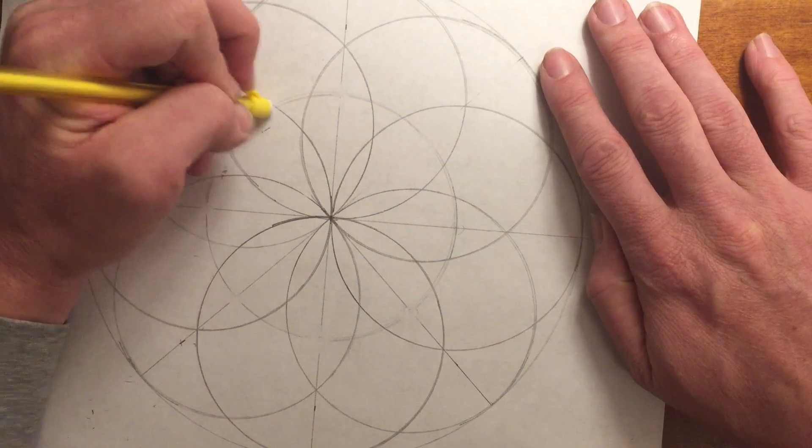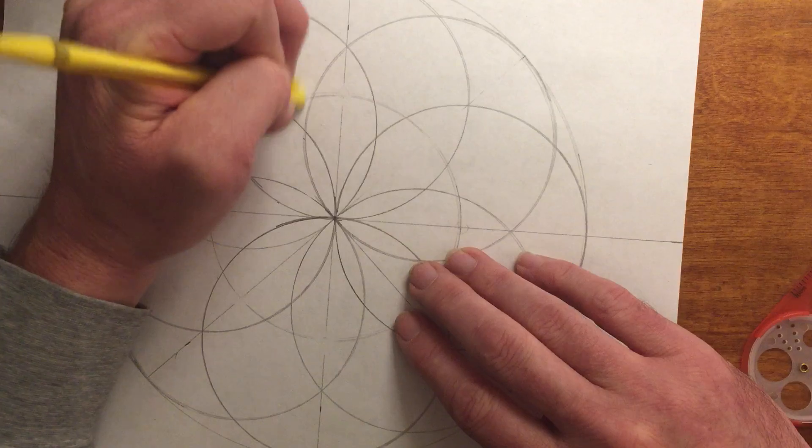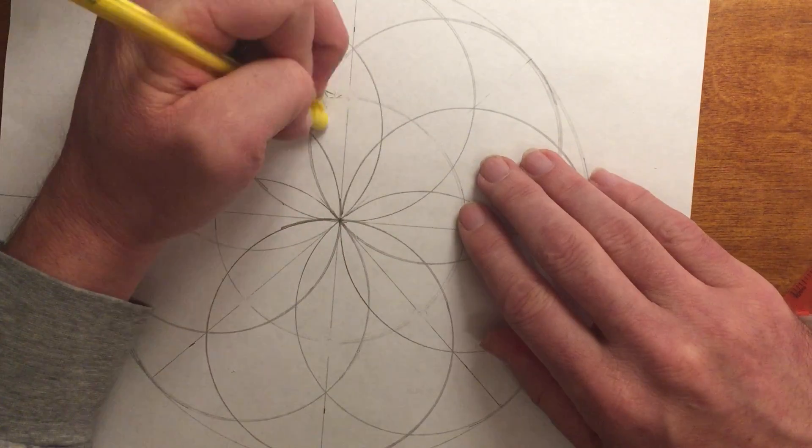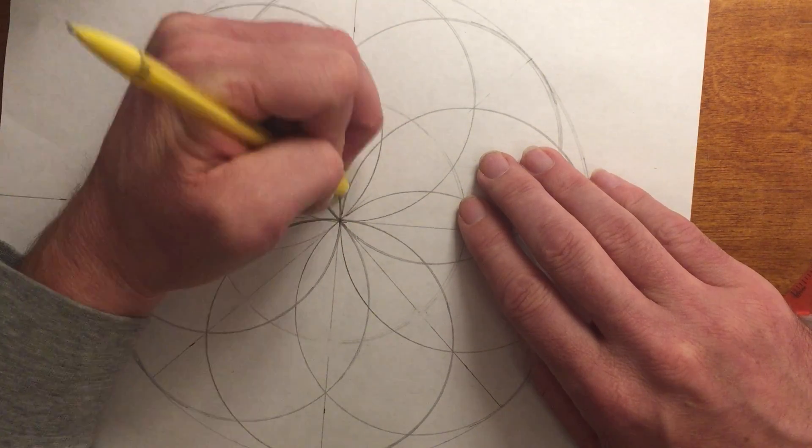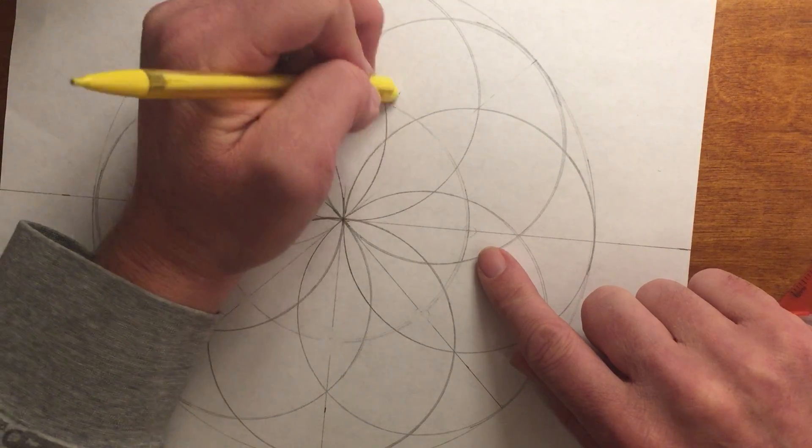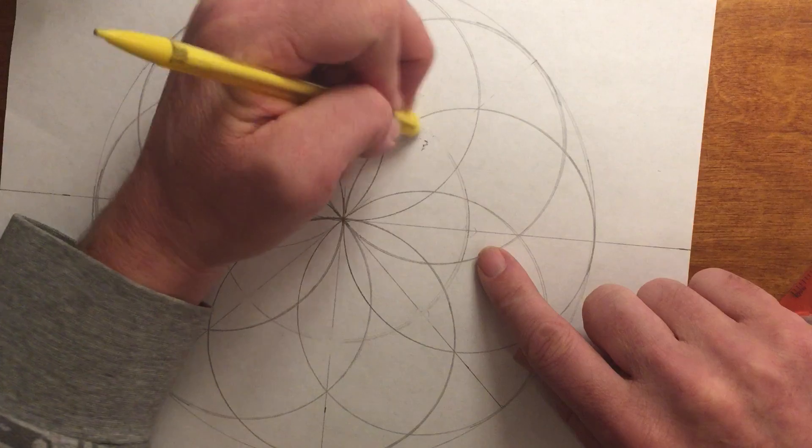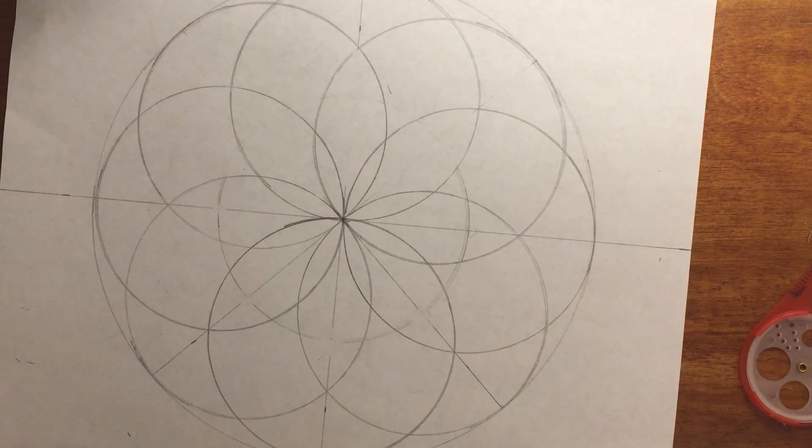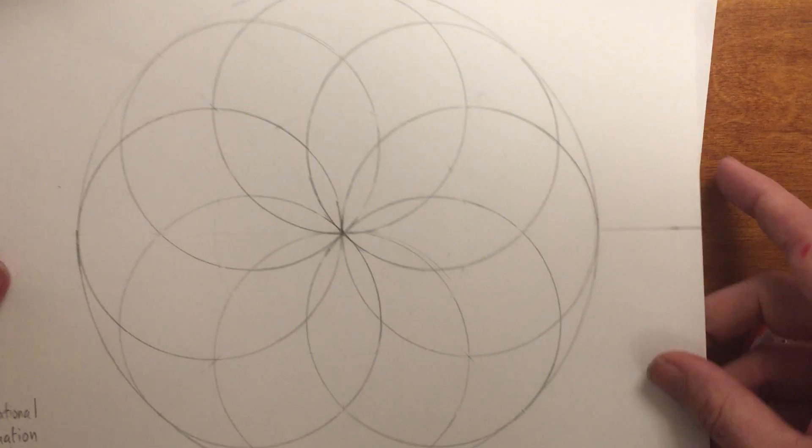I'm going to erase that and these center lines. You start to see a much cleaner piece here, and then I'm going to show you what this is going to look like when it's all erased. That's the idea.